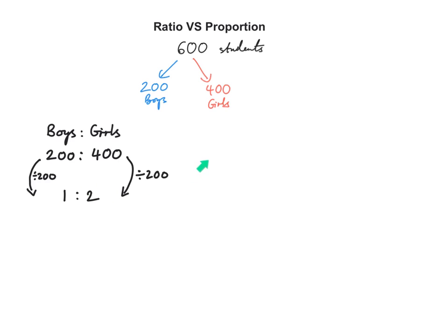Now contrast this with proportions. What is the proportion of boys? There are 200 boys out of a total of 600 — all proportions are out of the total. So the proportion of boys is just 200 over 600, which simplifies to one third by dividing the numerator and the denominator by 200.